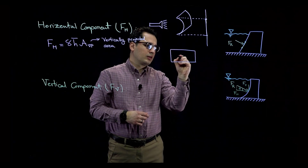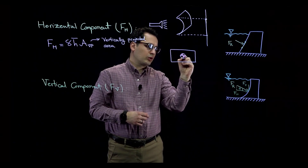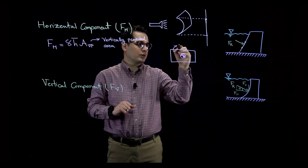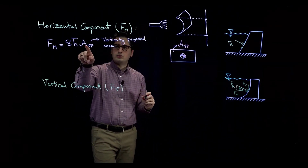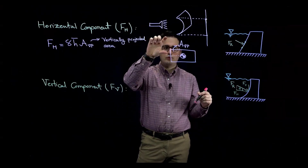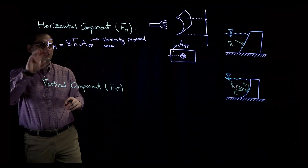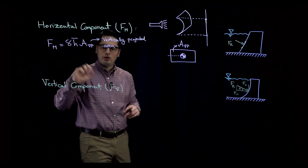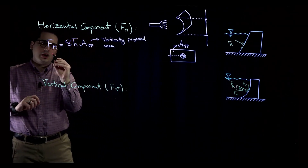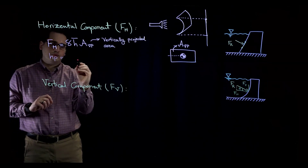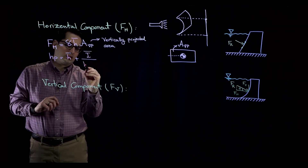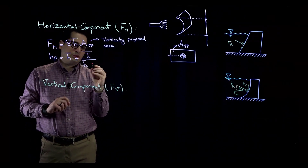In the middle of this rectangular projected area is the centroid, or center of gravity, of the vertically projected surface. The area of this rectangle is the vertically projected area A sub VP, and H-bar is the distance from the fluid surface all the way to the center of gravity. This is how you calculate the magnitude of the horizontal force, using H-bar for the vertically projected area.